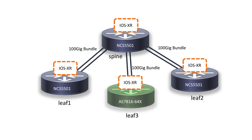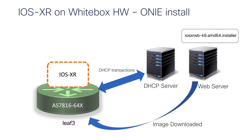The topology we intend to use: consider this part of a larger access network consisting of a single spine and three leaves. Leaf 1, Leaf 2, and the spine are all NCS 5501 devices from Cisco, whereas Leaf 3 is the AS7816 white box hardware on which we intend to install and boot IOS XR. Since the AS7816 uses ONIE as the device provisioning mechanism, we create an ONIE-compatible installer image for IOS XR.